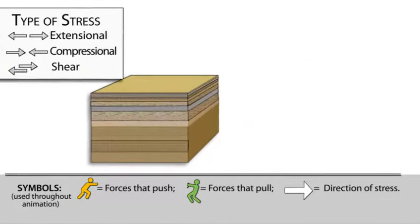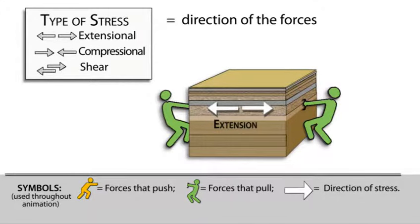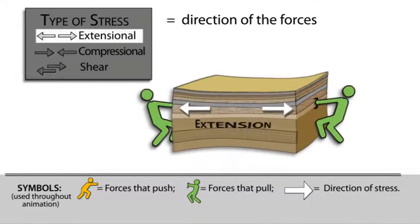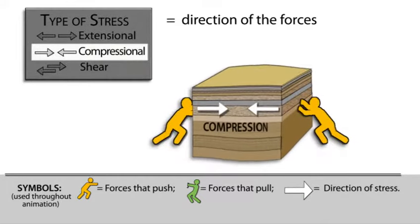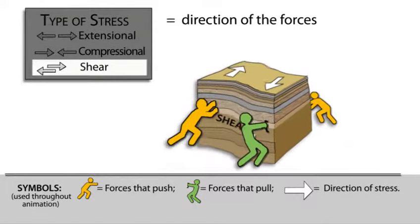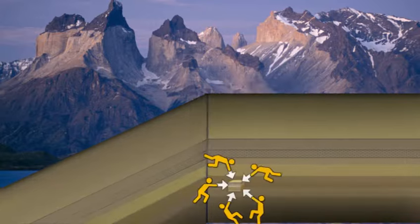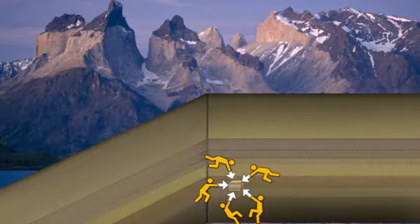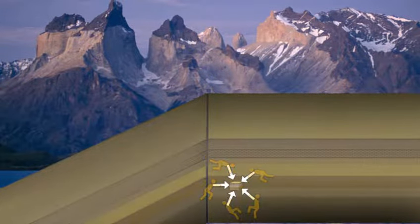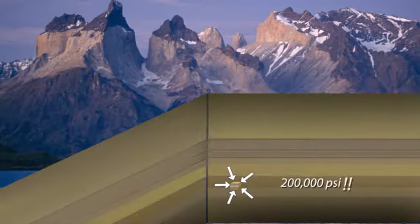The type of stress describes the direction of the forces acting on it. For example, tension pulls, compression pushes, and opposite horizontal forces shear. Thirty miles deep, rock undergoes a compressive stress in all directions that is nearly 200,000 pounds per square inch.